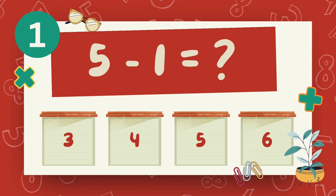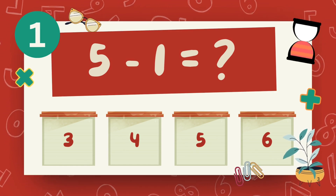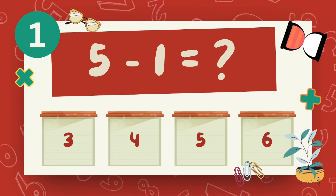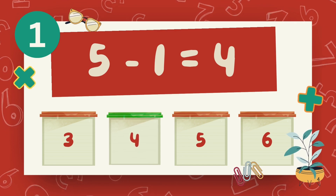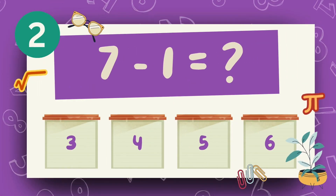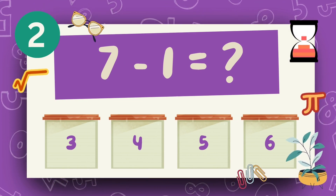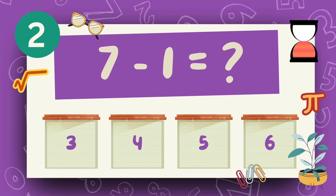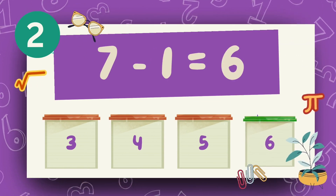What is 5 minus 1? The answer is 4. What is 7 minus 1? The answer is 6.